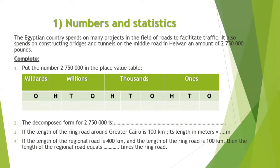Complete. Put the number £2,750,000 in the place value table. This table has a millions family, a thousands family, and a ones family. You know that a number can be divided into families. Each family consists of three places.